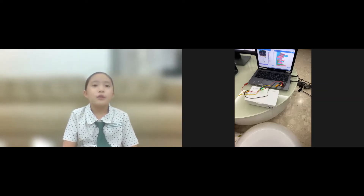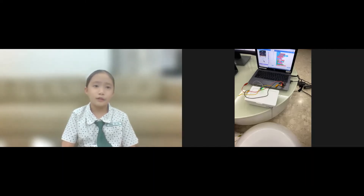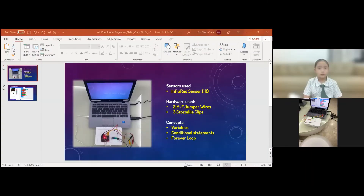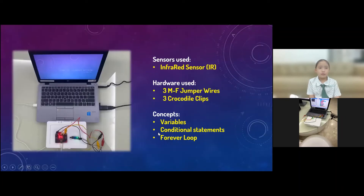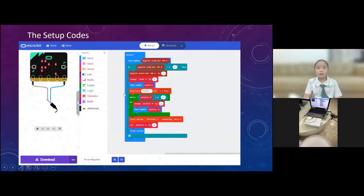Let me share with you my project now. The solution is set up as shown below. It uses an infrared sensor with three different pieces of jumper wires and crocodile clips. For coding, it uses variables, conditional statements, while loops, and forever loops.